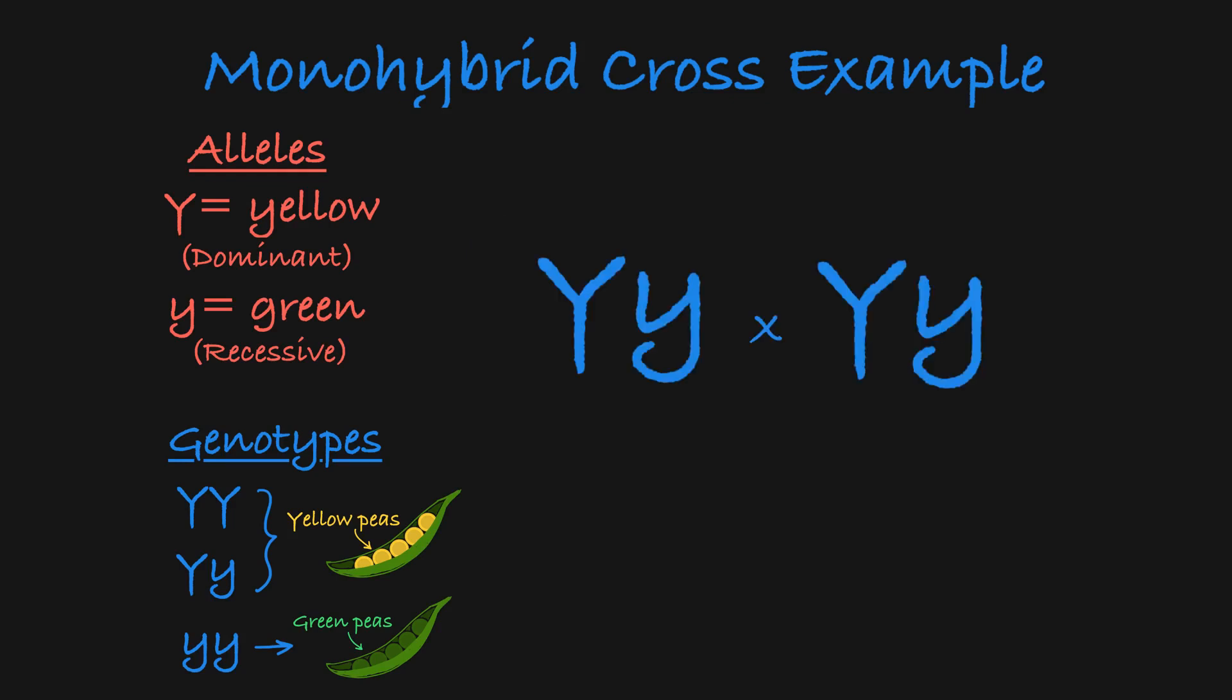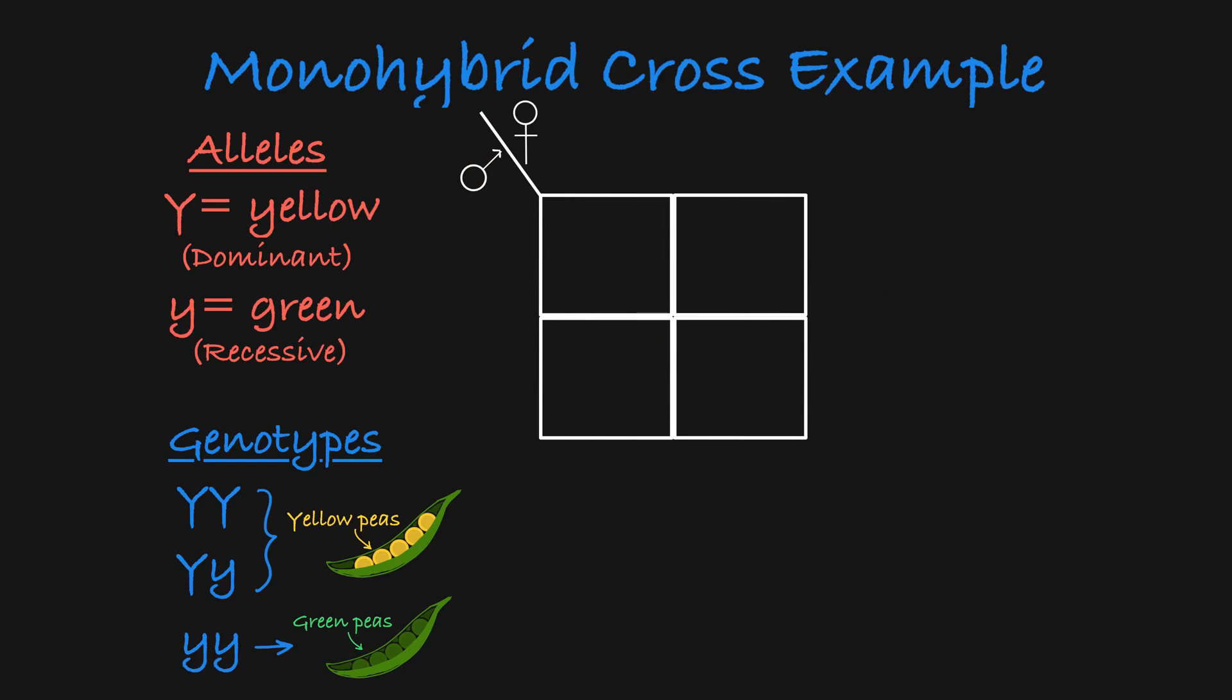So you have two parents that are heterozygous, and you want to predict what genotypes and phenotypes their offspring will have. When you set up a Punnett square for this cross,